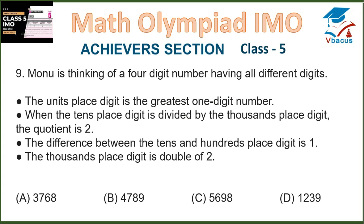Question 9. Mono is thinking of a 4-digit number having all different digits. The unit place digit is the greatest 1-digit number — that is 9. The thousand place digit is double of 2, so double of 2 is 4. When the tens place digit is divided by the thousand place digit, the quotient is 2.